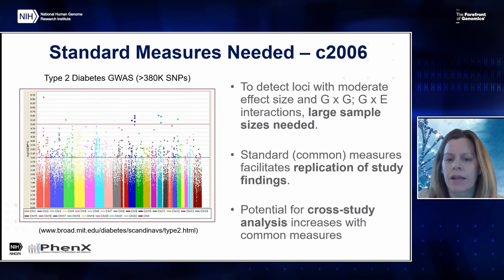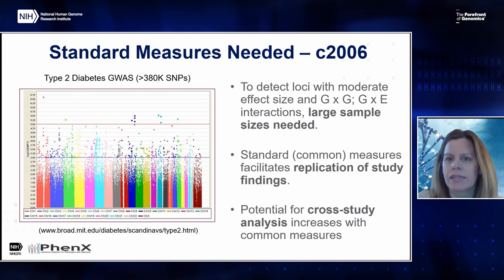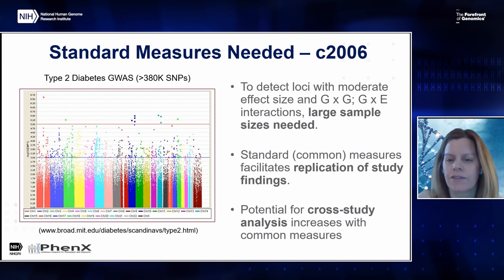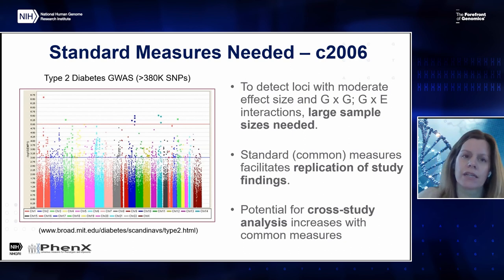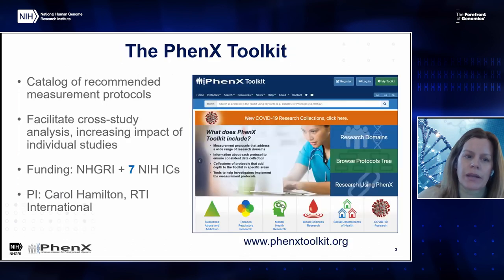Our hope was that we'd be able to combine many of these studies to generate large sample sizes. It became quickly apparent that the lack of common phenotypic and environmental exposure data collected across these different studies really was a rate-limiting step, and that years were being spent on data harmonization efforts before you could really dig into the analyses. That really led us to the PHENIX Toolkit.